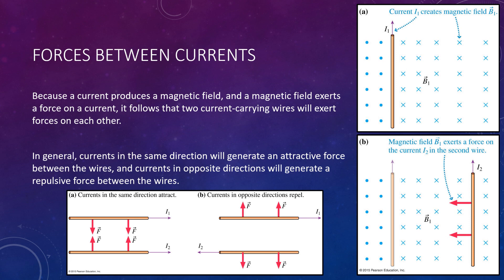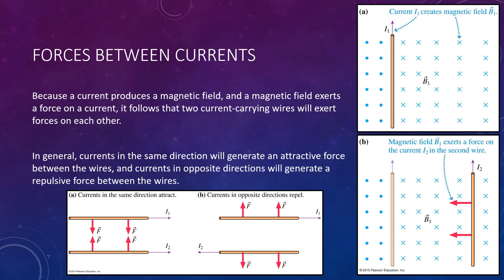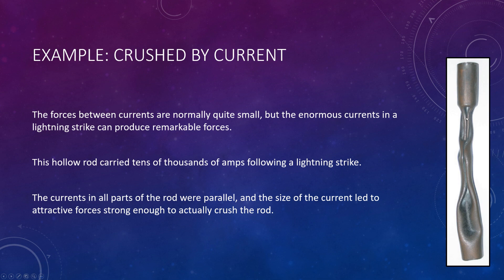One really amazing result of this is what happens in a lightning strike. We know that if we have current going in the same direction, there will be an attractive force between two wires. Now imagine a lightning strike hitting a metal cylinder — imagine the two edges of a cylinder. The current is going to pass downward through the entire cylinder, meaning current is going in the same direction along all sides of the cylinder.